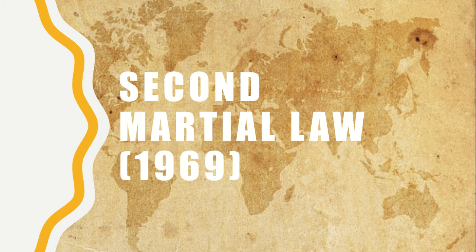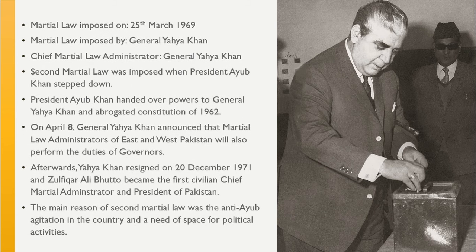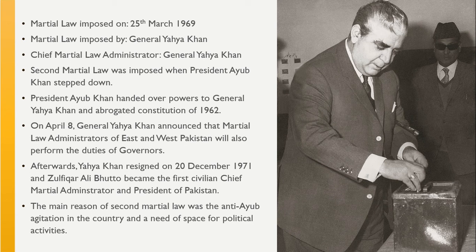2nd Martial Law 1969. Martial Law was imposed on 25th March 1969. Martial Law was imposed by General Yahya Khan. Chief Martial Law Administrator was General Yahya Khan. 2nd Martial Law was imposed when President Ayub Khan stepped down.